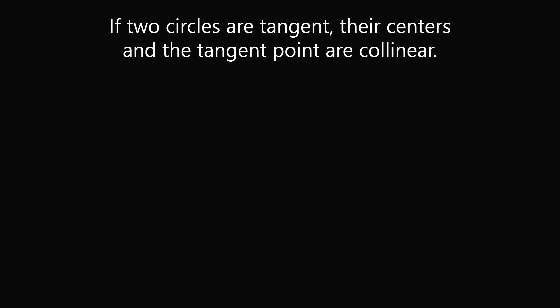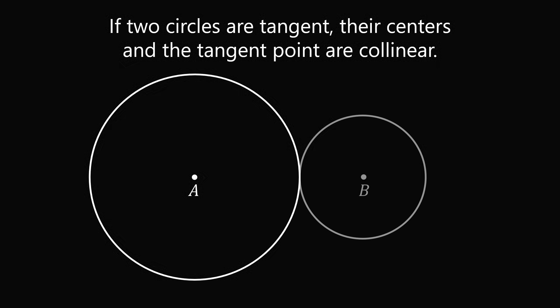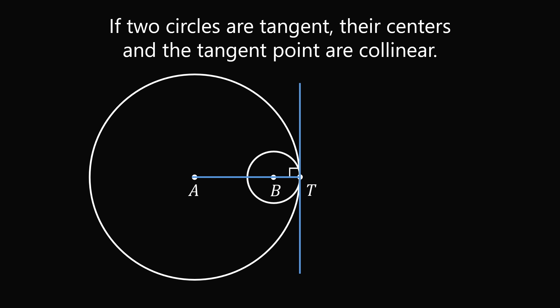To get started, we will recall a principle. If two circles are tangent, their centers and the tangent point are collinear. If we have circles A and B that are tangent at a point T, then draw the tangent line through the point T. AT will be perpendicular to the tangent line, and BT will also be perpendicular to the tangent line. Therefore, ATB will be a straight line segment. This is true for both externally and internally tangent circles.